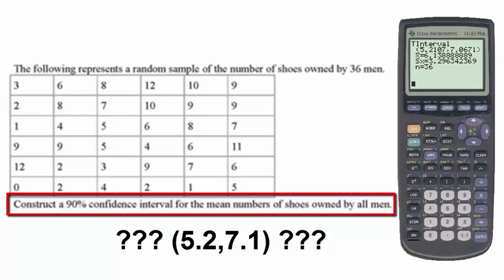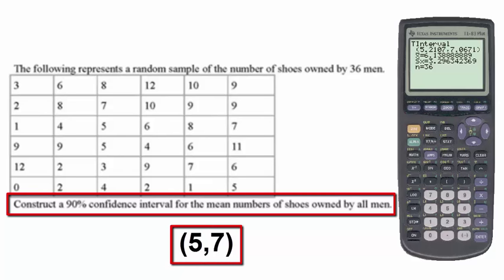The interval should be in terms of counting numbers, so our confidence interval would make most sense by having parentheses 5 comma 7, or writing this in terms of margin of error notation, we have 6 plus or minus 1.